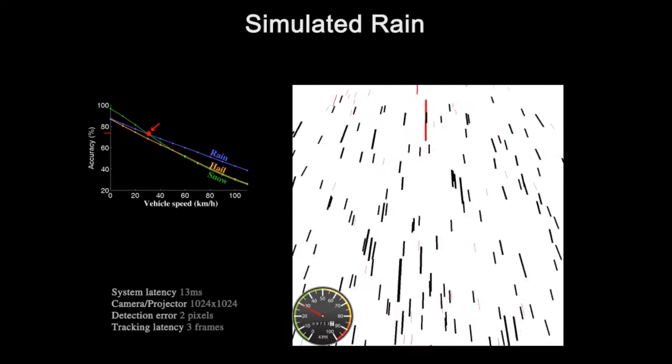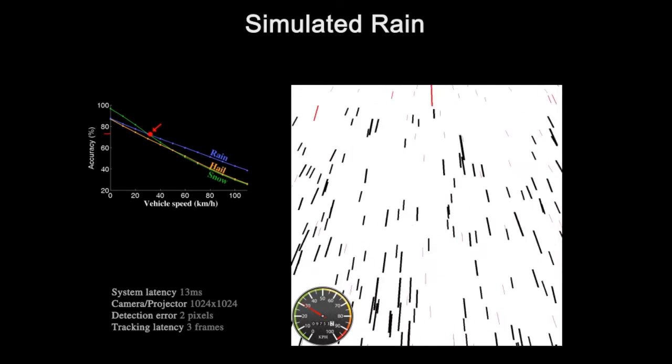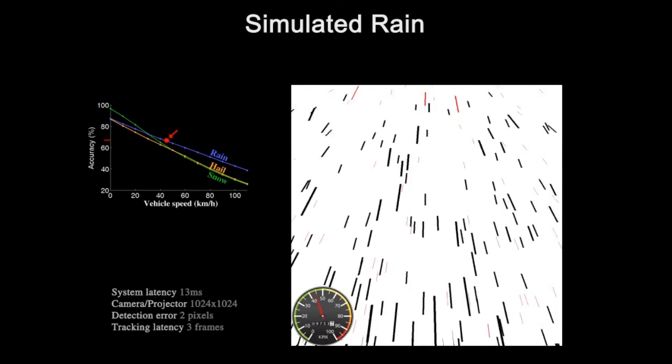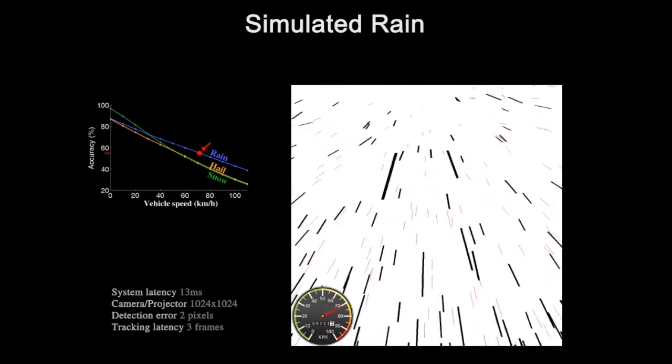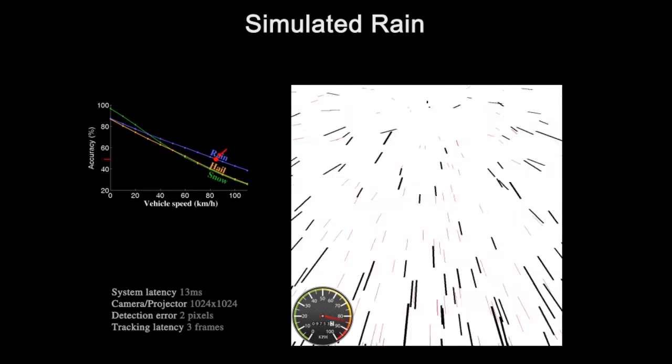At 30 km per hour, the accuracy is 73%. At very high speeds, our system is still capable of not illuminating many of the drops, while still maintaining high light throughput.